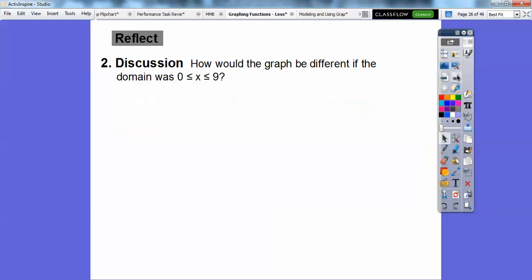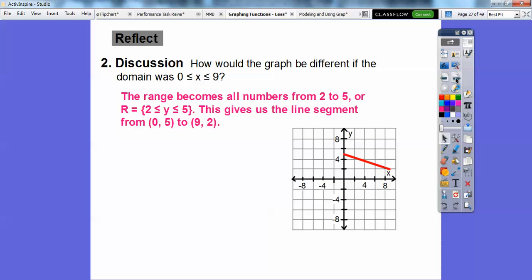How would the graph be different if the domain was all numbers between 0 through 9? So 1, 2, 3, 4, 5, 6, 7, 8, 9, all the decimals and everything. What would happen is it would be everything in between that. We'd still get 2 and 5 for the 0 and the 9, but it would be everything in between, giving us a straight line segment.